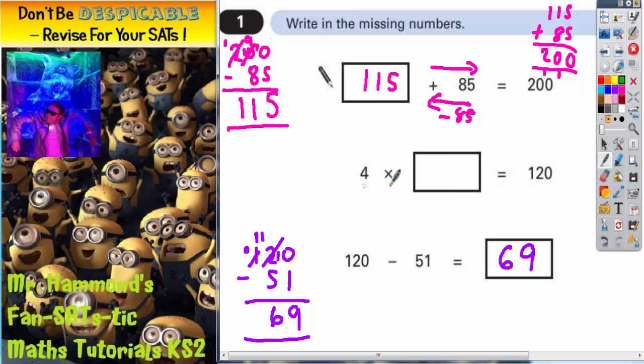The last one, 4 times by this mystery number is 120. So we are timesing by 4. If we want to get this mystery number, we do the opposite of times 4, which is divide by 4. So if we start with 120 and divide it by 4, we will get the mystery answer.